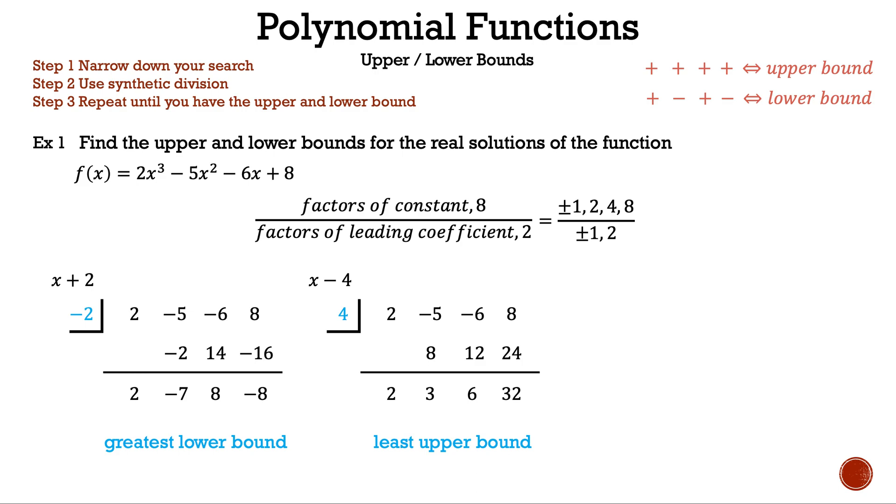Now we found the greatest lower bound. Let's see what we found. We can create an interval using the greatest lower bound and the least upper bound. And that interval is (-2, 4). This tells us the real zeros are in there somewhere.